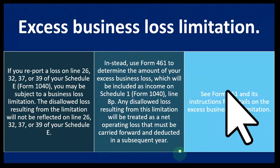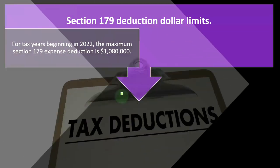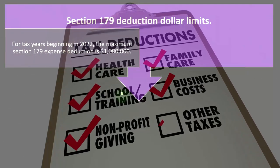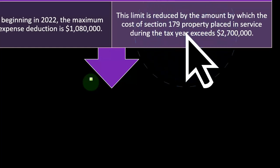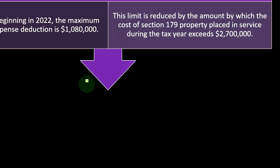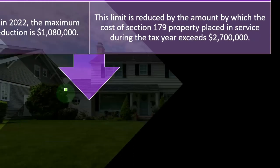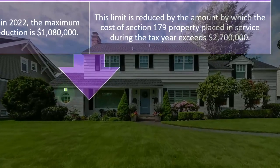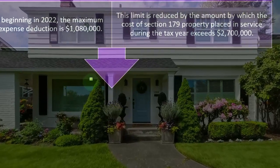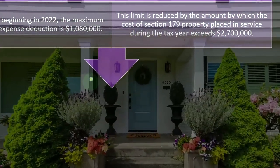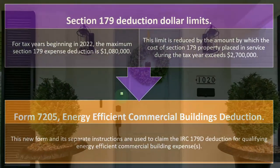You can see Form 461 and its instructions for details on the excess business loss limitations. For the Section 179 deduction dollar limits: for tax years beginning 2022, the maximum Section 179 expense deduction is $1,080,000. This limit is reduced by the amount by which the cost of Section 179 property placed in service during the tax year exceeds $2,700,000. Section 179 relates to depreciable property and whether you can take more depreciation in the first year the property is placed in service.